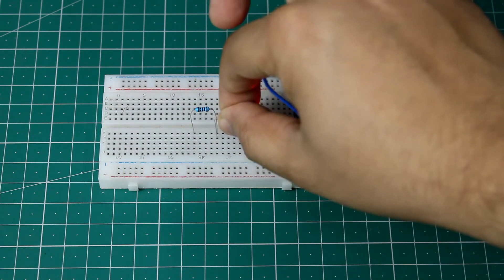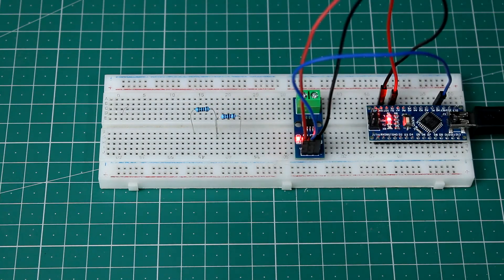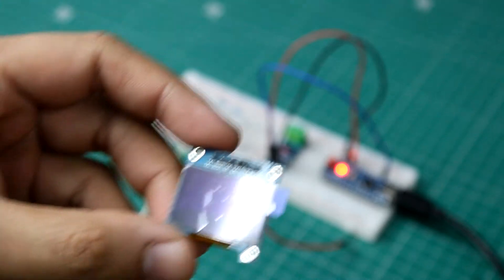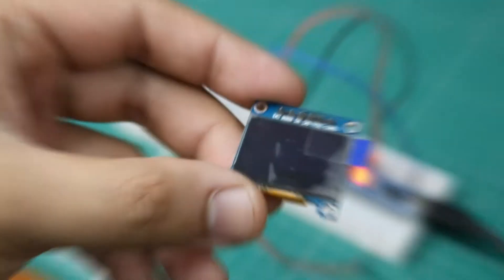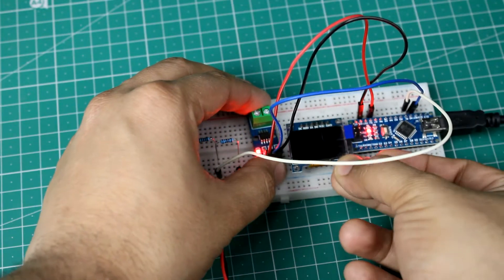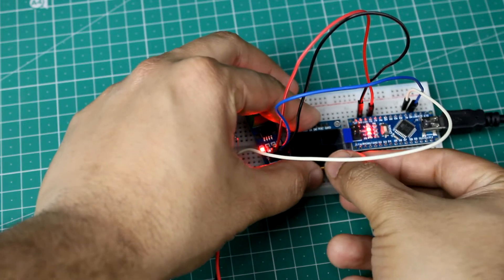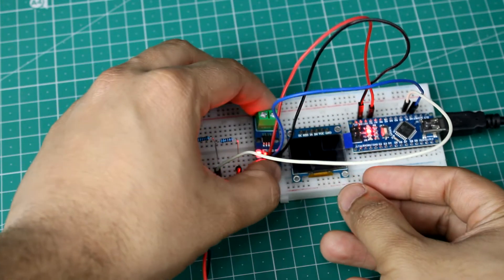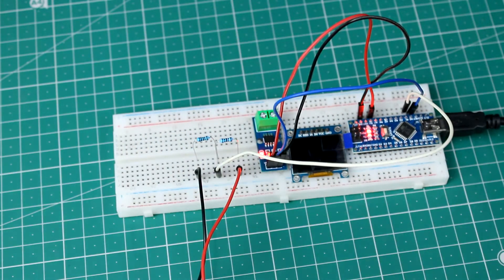Next I added an OLED display module to display the current and voltage being measured. With the code I have written, the Arduino can also calculate the total time elapsed, current consumed in milliamp hours, and total power consumed in watt hours.